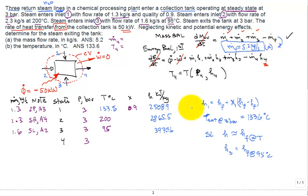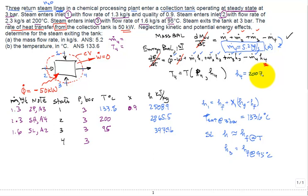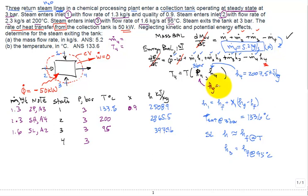Now applying the energy balance with ṁ₁, ṁ₂, ṁ₃, ṁ₄ and their enthalpies, and with Q̇ = −50 kW and Ẇ = 0, solving the algebra gives H₄ = 2007.5 kJ/kg from the energy balance.